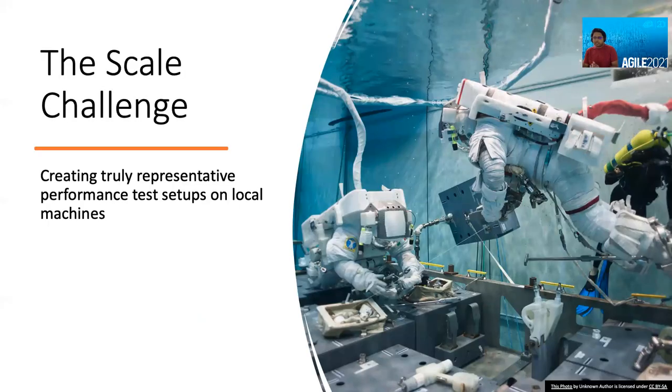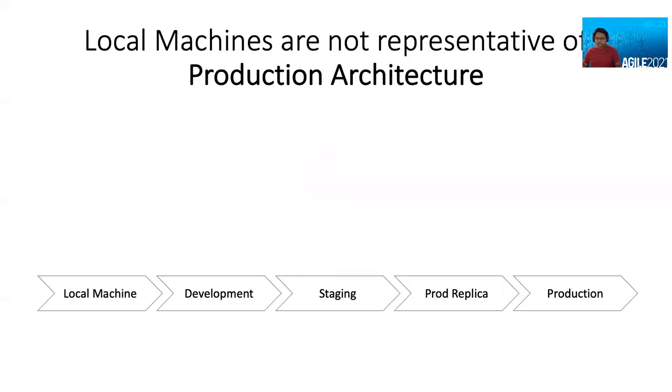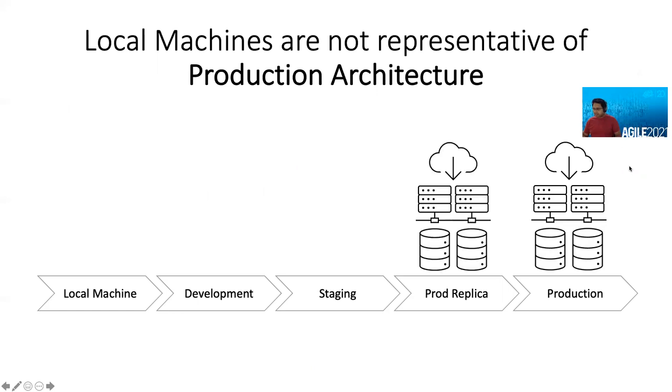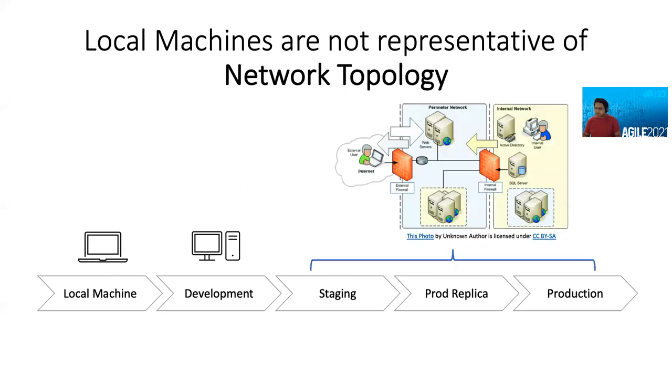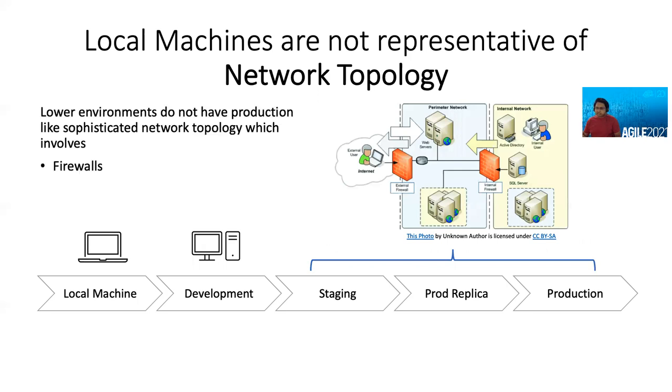Let's look at the challenges with shift left. The first one is obviously creating a representative perf test environment on the left hand side or on your local machine or lower environments. What's the difficulty? The first one is obviously the production architecture itself. You have fairly complicated architectures on cloud, multi-cloud, hybrid cloud. And on staging, it becomes a little less complex. And ultimately, by the time you have your developer environment, it's just a humble laptop. How do we equate all these environments and say that something that's tested here will work in a higher environment?